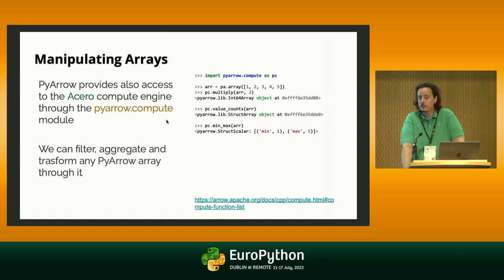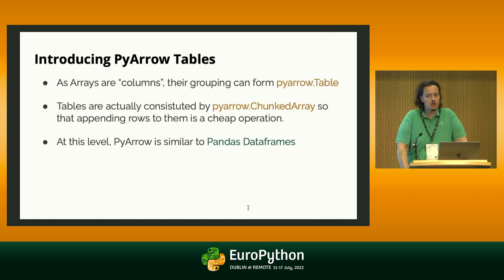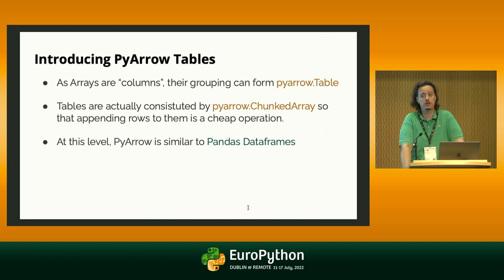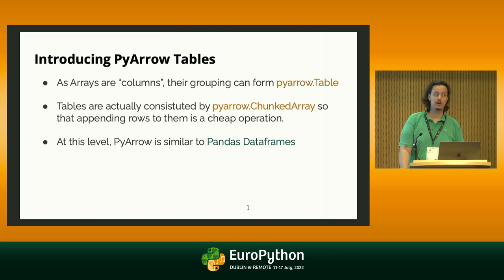If you are interested in all the features that the Acero compute engine can provide, you can find them listed in the documentation under the compute page. Arrow was born as a columnar format, which implies that if you have columns, you can put them in a table. So PyArrow also provides the table object, which is a bit more like a pandas DataFrame. It's actually very different because tables are more lightweight and don't provide the same rich set of capabilities out of the box, but they are optimized for storing data.